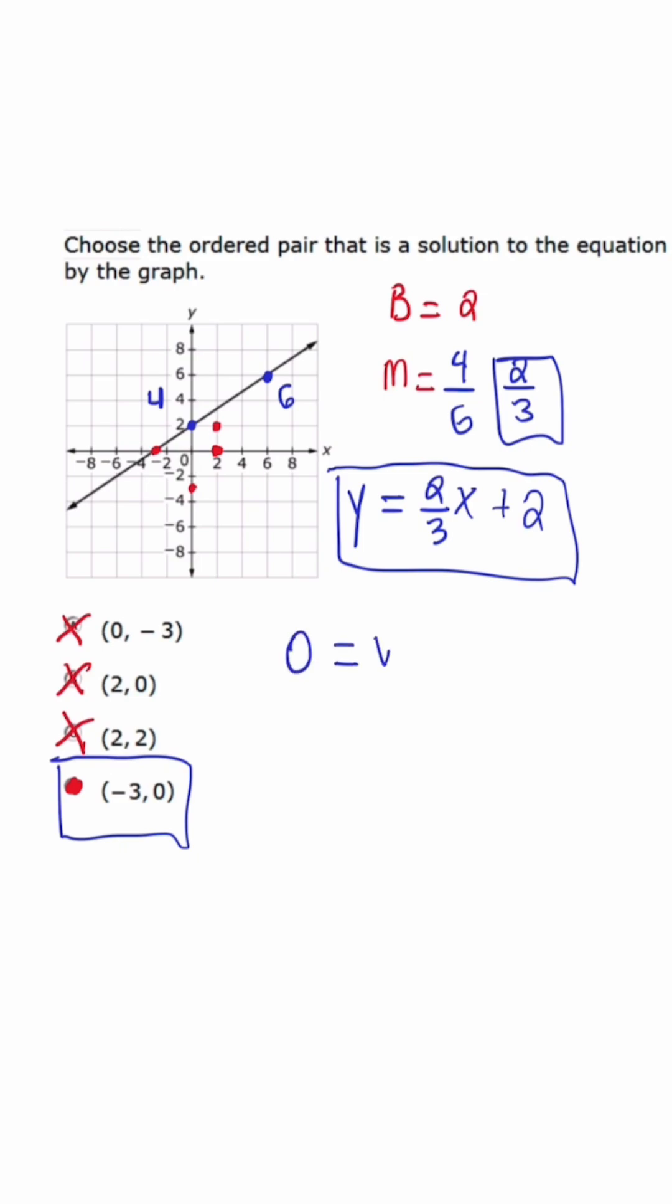So 0 equals 2 over 3 times -3 plus 2. So 0 equals... the 3s cancel out. 2 times -1 is -2. Add the other 2. So 0 equals 0.